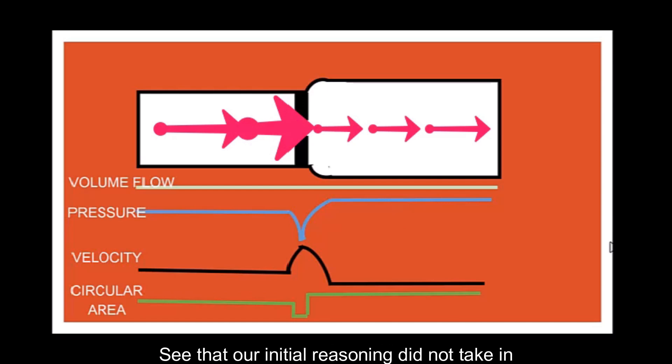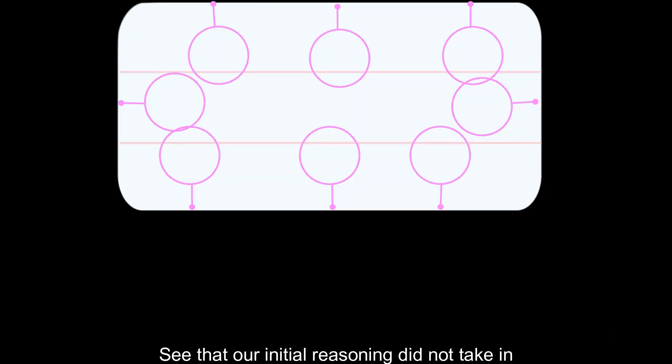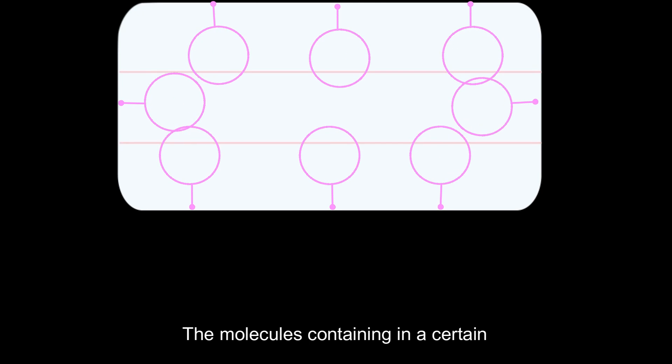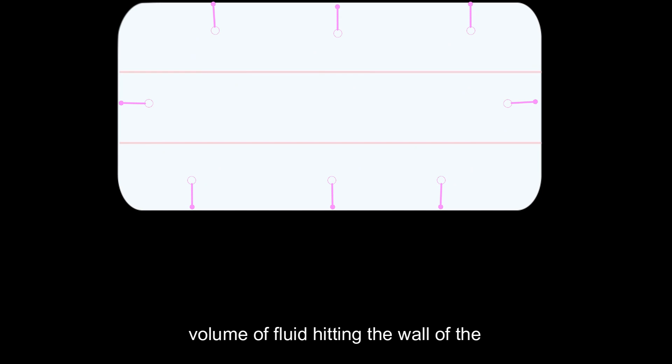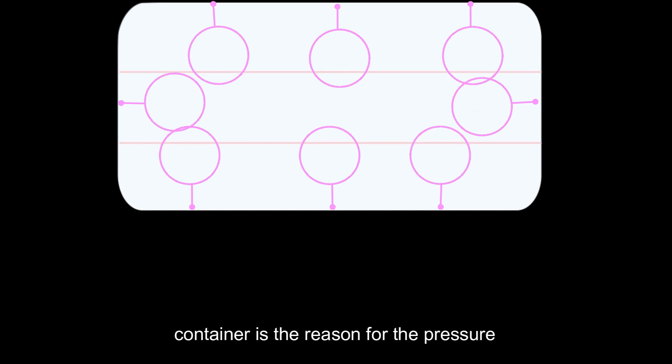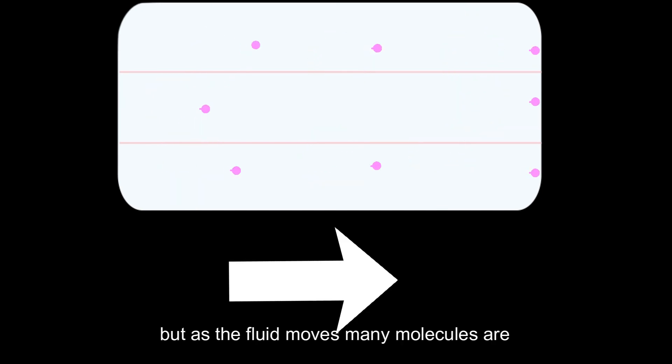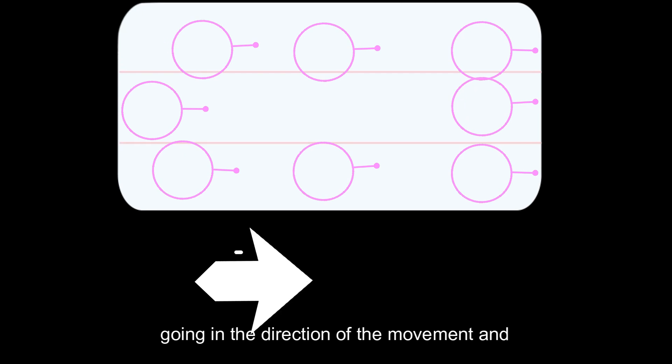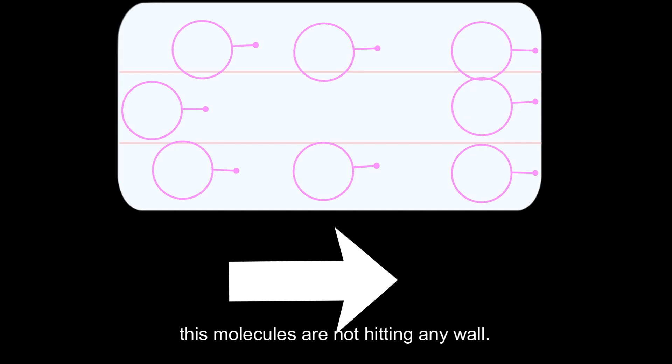See that our initial reasoning did not take in consideration the variables that we know now. The molecules containing in a certain volume of fluid hitting the wall of the container is the reason for the pressure. But as the fluid moves, many molecules are going in the direction of the movement. And these molecules are not hitting any wall. It is just moving.